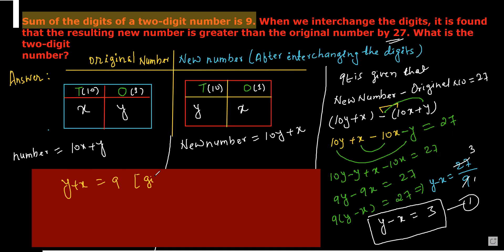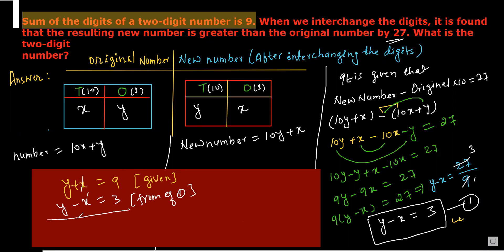From equation 1: y minus x equals 3. Adding equation 1 and equation 2: y plus x equals 9 and y minus x equals 3. Adding gives 2y equals 12, so y equals 6.